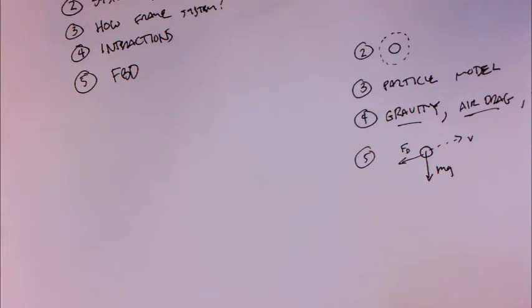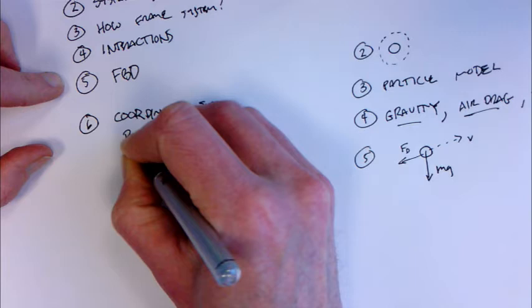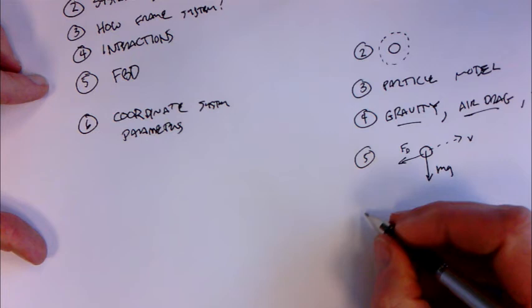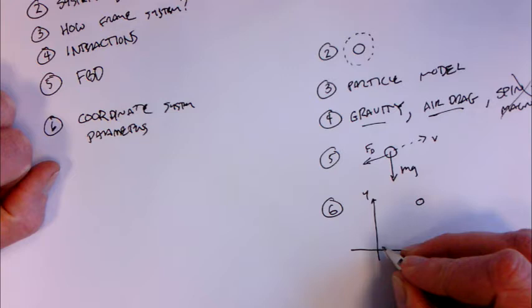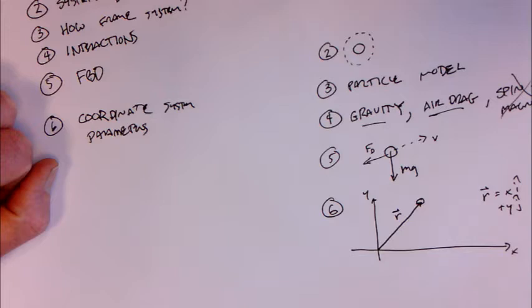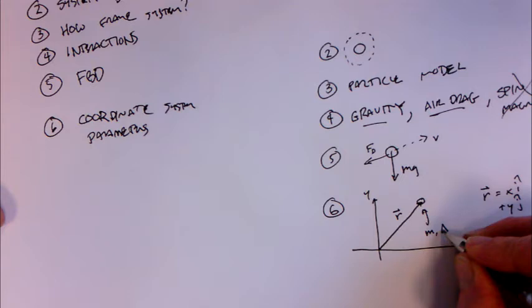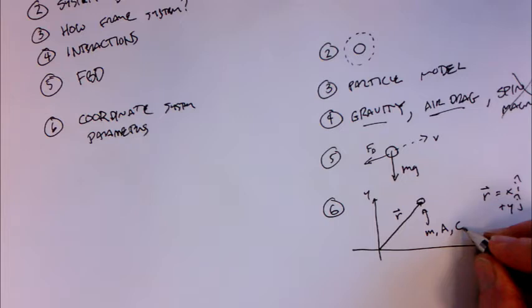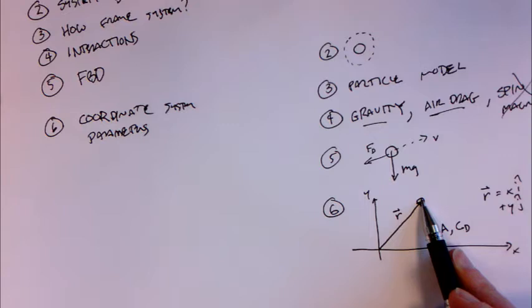Now we start to pull out some mathematical tools. We ask: what's the coordinate system and what are the parameters we're dealing with? For modeling a ping-pong ball, a Cartesian coordinate system seems like a good choice. I'll choose an x-axis and a y-axis, and say the ping-pong ball is located at some position vector r, where r-vector equals x times i-hat plus y times j-hat. The ping-pong ball has some mass, a cross-sectional area related to its radius, and since we're dealing with drag, it also has a drag coefficient associated with the shape of the sphere.